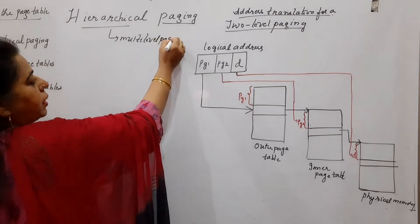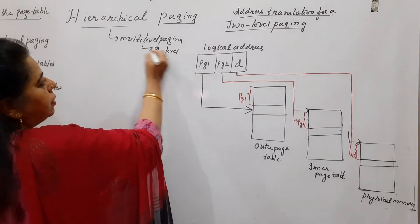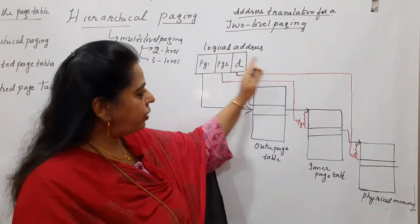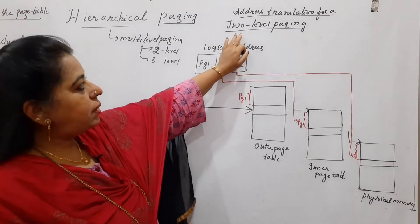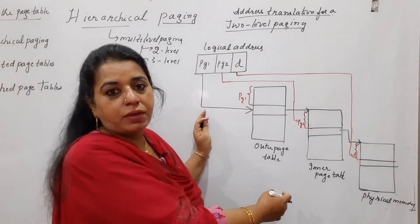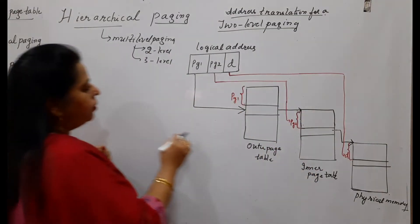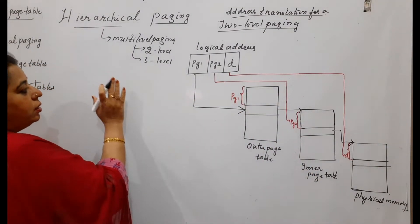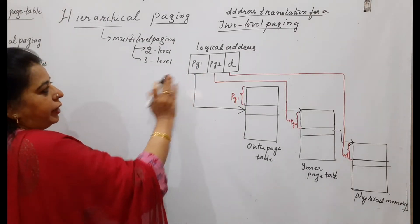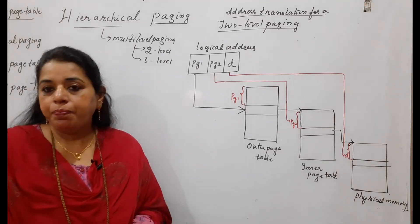In multi-level paging, it can be two-level, three-level, and so on. In this session I have a diagram representing two-level paging, which is the diagram given in the textbook. Before I explain with respect to the diagram, I would like to tell you exactly the concept behind getting into this kind of paging — that is, two-level paging or hierarchical paging.